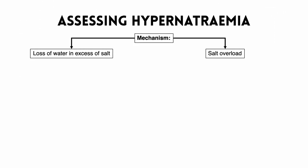The assessment of hypernatremia is much simpler than the assessment of hyponatremia. There are two main mechanisms which cause hypernatremia: loss of water in excess of salt, and salt overload. The vast majority of cases fall into the first of these — loss of water in excess of salt — which describes the body losing more water without losing salt.